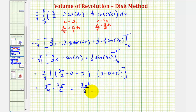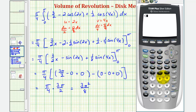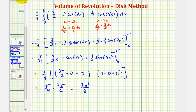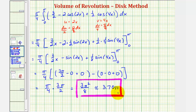Let's also get our decimal approximation. Our numerator is three pi squared divided by eight, so the approximate volume is approximately 3.7011. We found the exact volume as three pi squared divided by eight and the approximate volume of 3.7011. I hope you found this helpful.